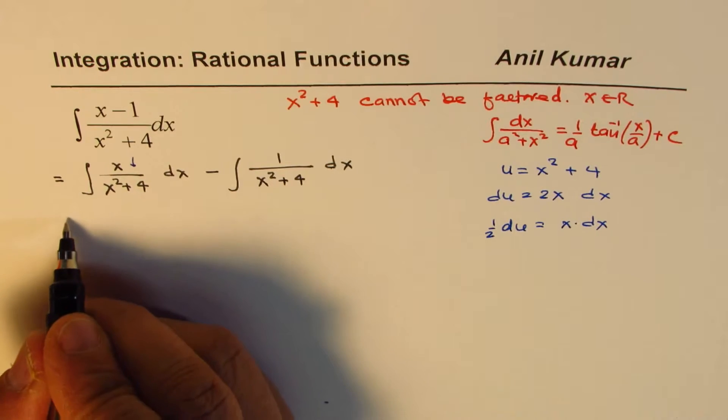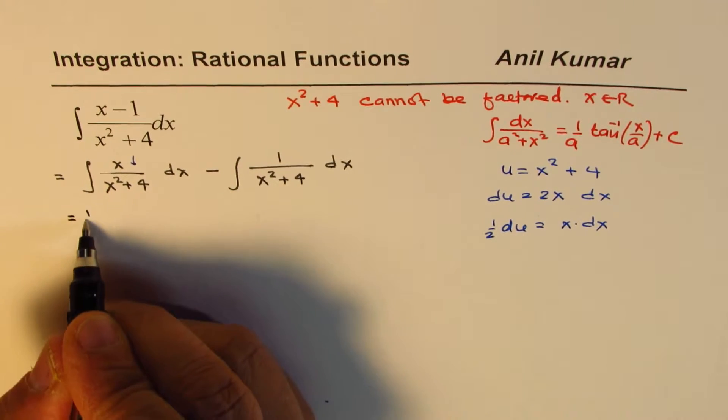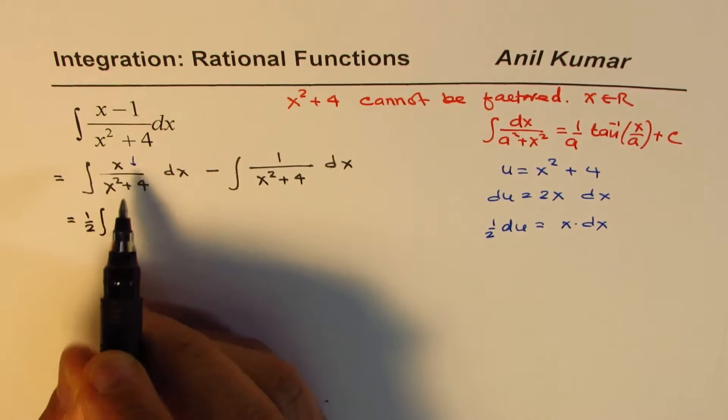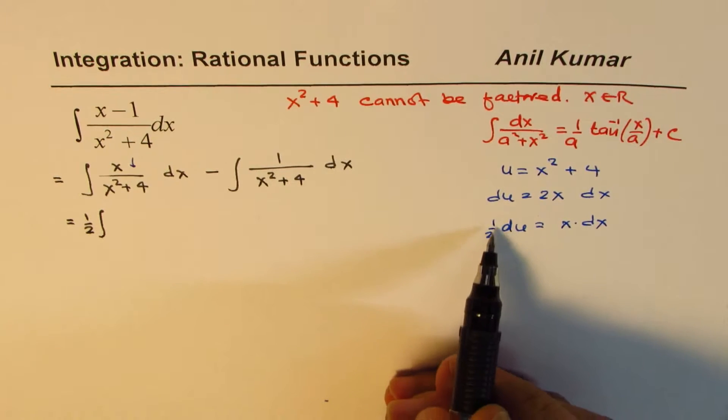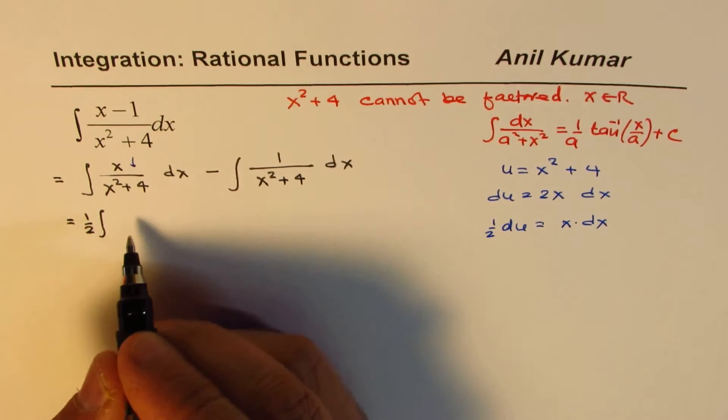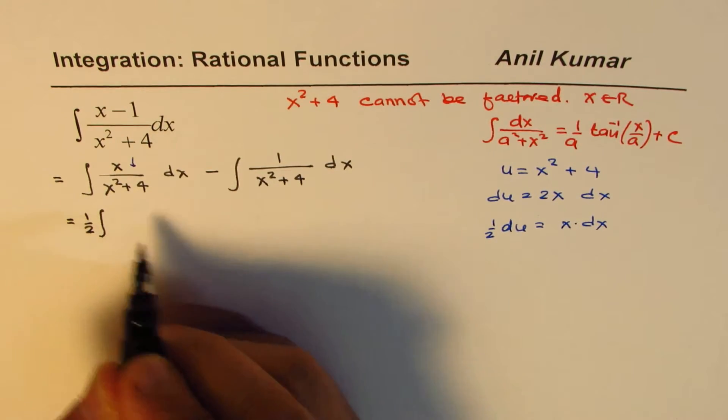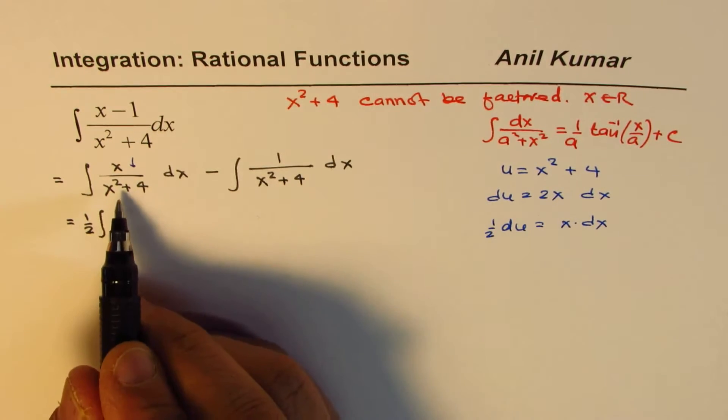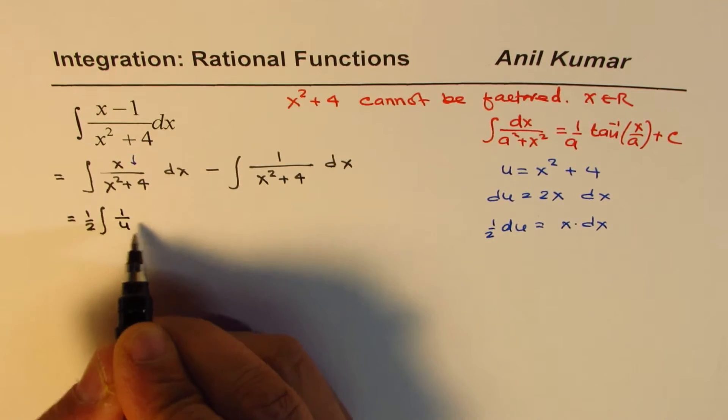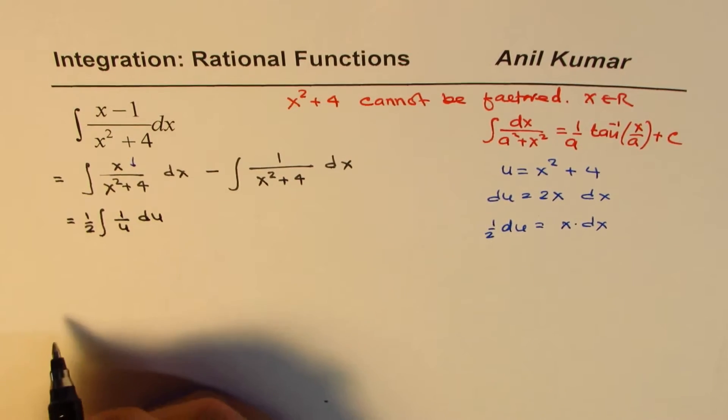So, what we get here is equal to half integral of du over u. So, we can write this as 1 over u du. That is the spot.